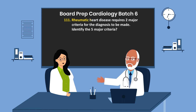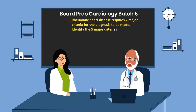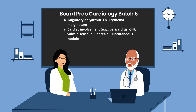Question 111. Rheumatic heart disease requires two major criteria for the diagnosis to be made. Identify the five major criteria. 1. Migratory polyarthritis. 2. Erythema marginatum. 3. Cardiac involvement, including pericarditis, congestive heart failure, and valve disease. 4. Chorea. 5. Subcutaneous nodules.